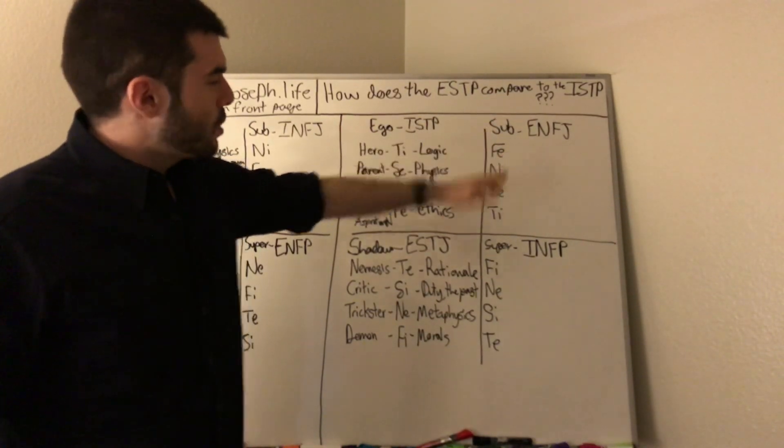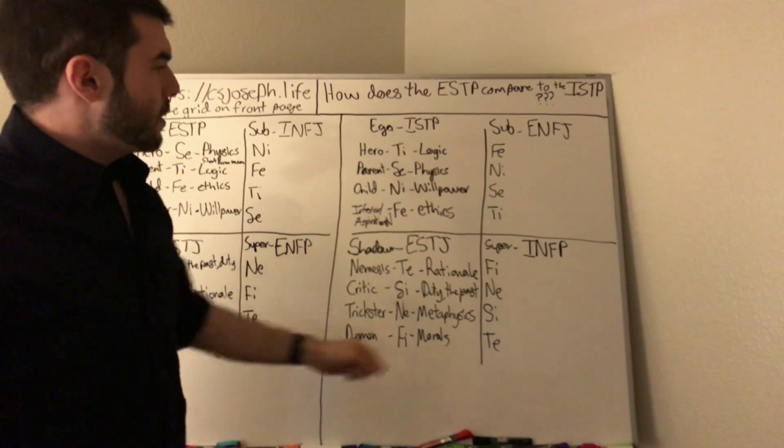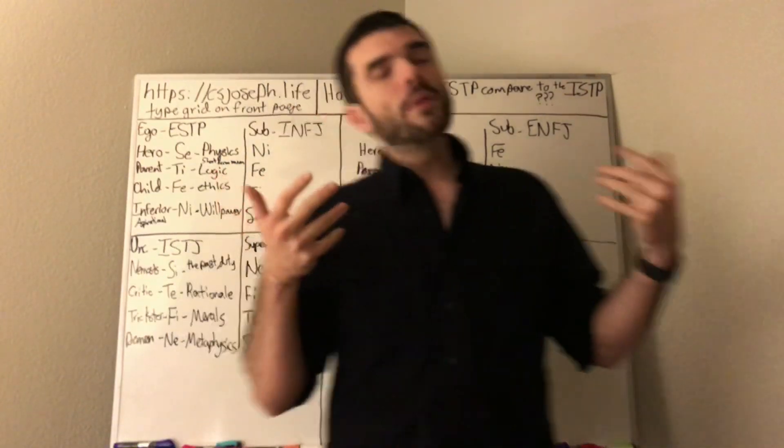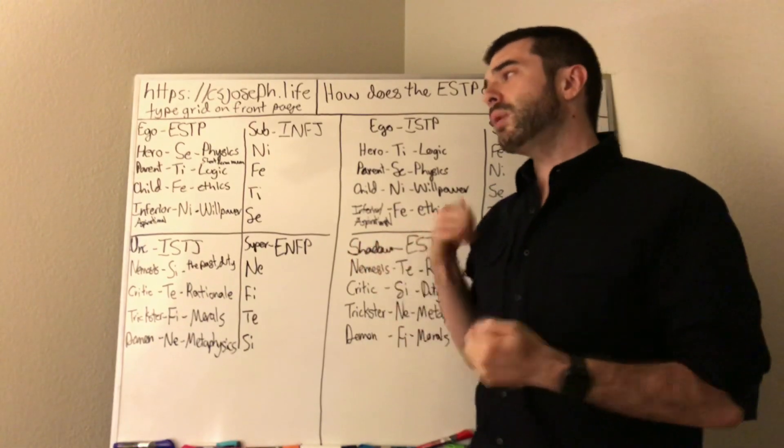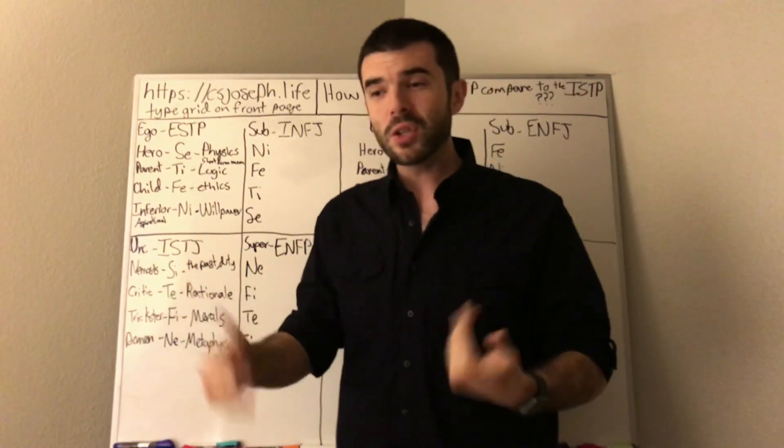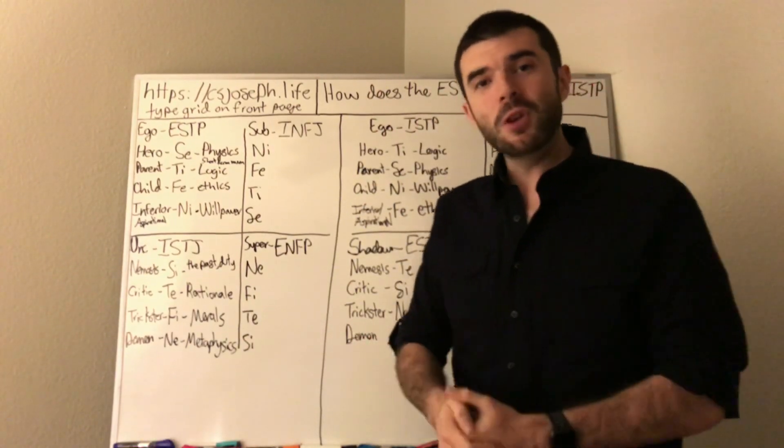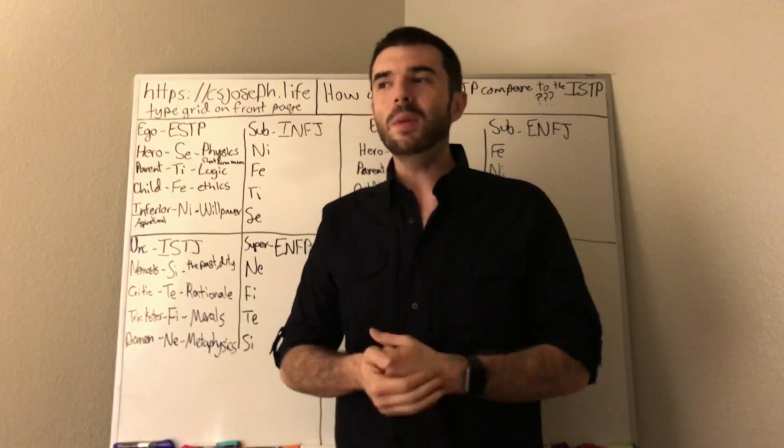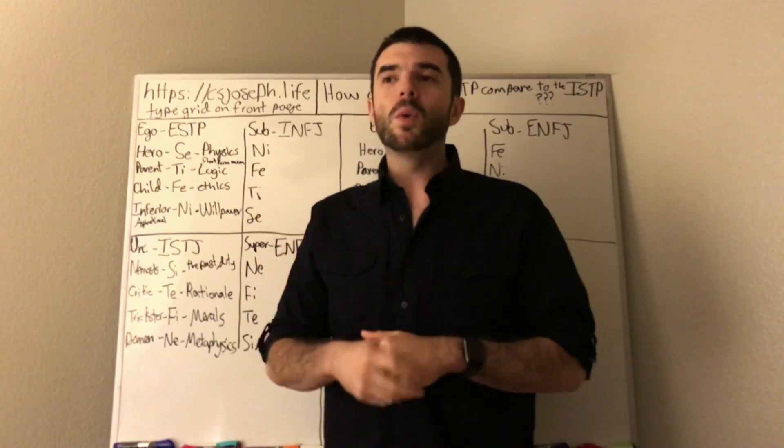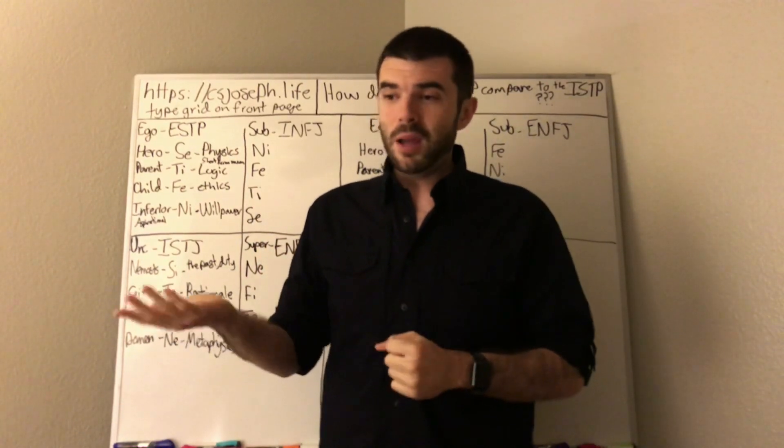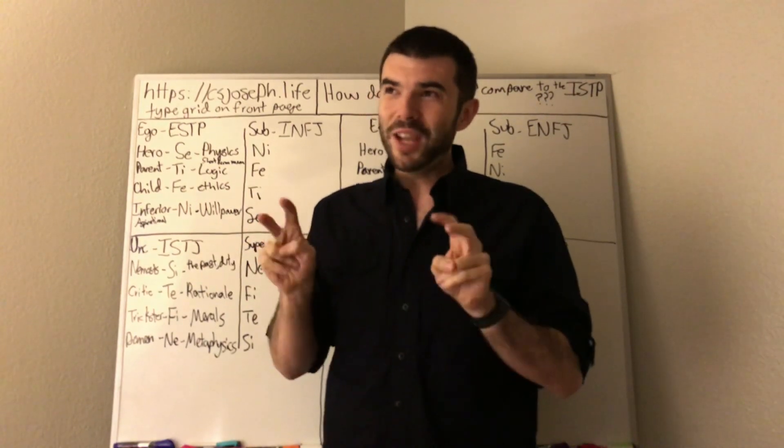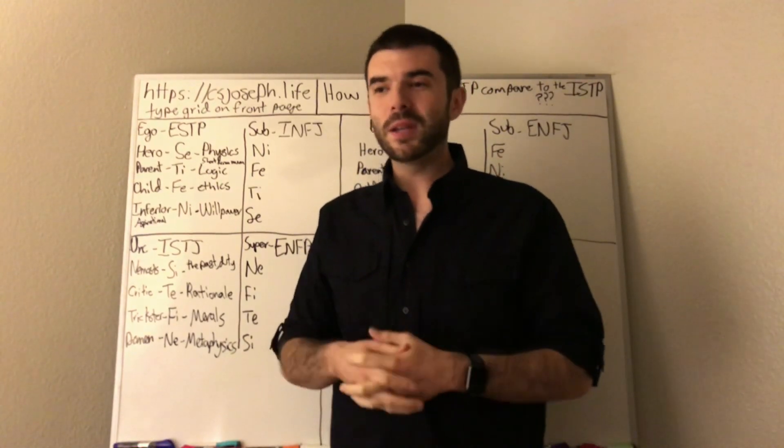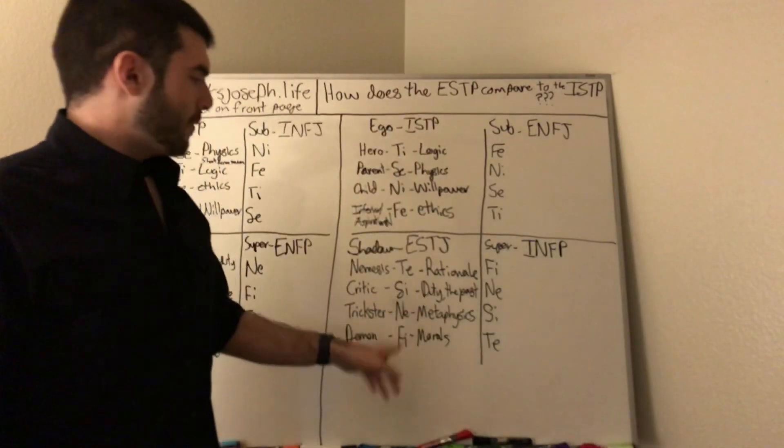So ESTP ego, ESTP subconscious is INFJ, unconscious also known as the shadow is the ISTJ and the superego is the ENFP. Whereas the ISTP, we have the craftsman as the ego ISTP, and then we have the subconscious which is the ENFJ mentor. The shadow is the ESTJ overseer and the superego is the INFP. Very similar. They're both very logical. They both live in the moment. They both do whatever they want. They both want to give people reality checks and do loyalty checks on people and give people a good experience. And they want to make people feel good. And they want to be seen as a very caring individual.